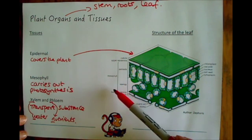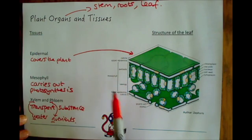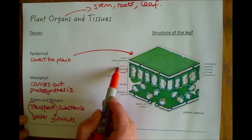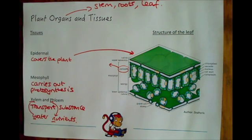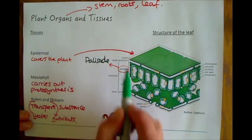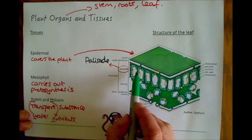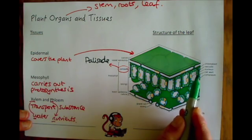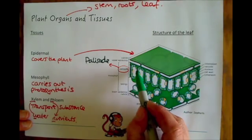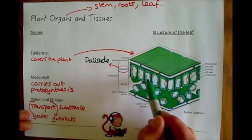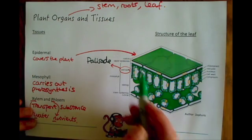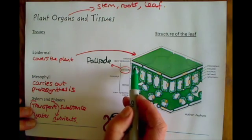Below that is the really complex layer which is the mesophyll, and this is split into two layers. We've got the palisade layer, which is full of palisade cells — rectangular, regular shapes so loads of them can pack in just under that epidermal layer. As you can see, they are absolutely full of chloroplasts.